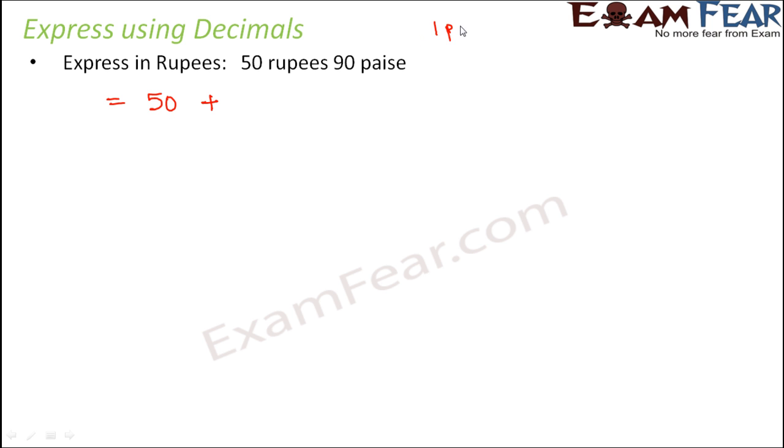That's because this actually means 50 rupees plus 90 paisa. Now, as I mentioned before, 1 paisa is 1 out of 100 rupee, right? So 1 part out of 100 parts of a rupee is 1 paisa. So that means 90 paisa would be 90 divided by 100 rupee. So this basically is 50 plus 0.90. So this is equal to 50.90. So this can be expressed as rupees 50.90. So you see we made use of decimals to express this in rupees.